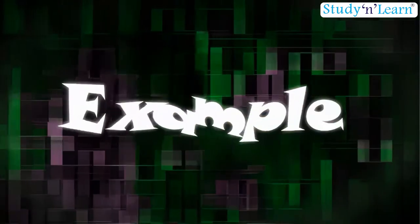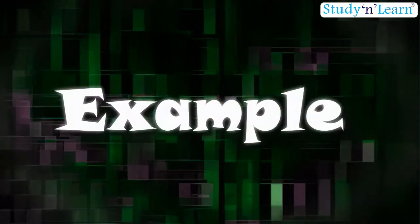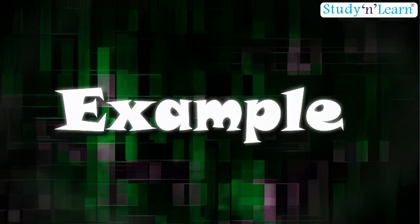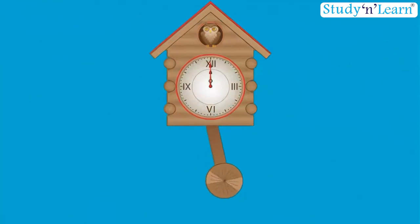Let us take some real-life examples for this kind of motion. Motion of the pendulum of a wall clock you see in your house is an example of oscillatory motion as the dial moves to and fro about the mean position.